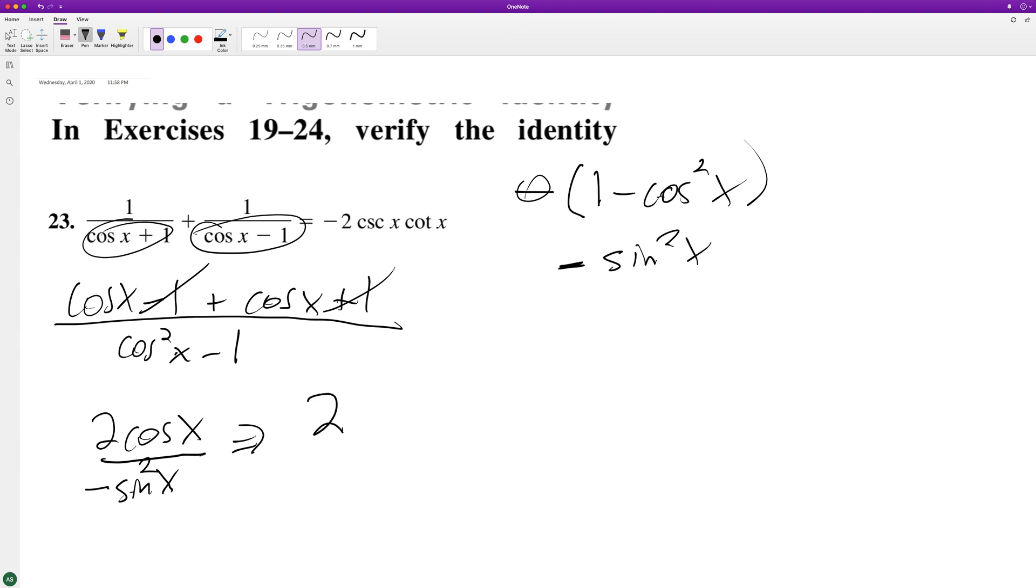So breaking this down further, 2 times cosine of x over 1 of the sine of x's, that should be negative 2, times 1 over sine of x. This is a cotangent. This is a cosecant. And then there's our negative 2.